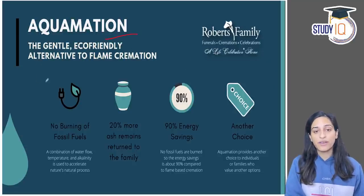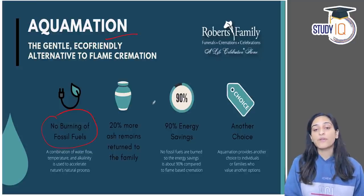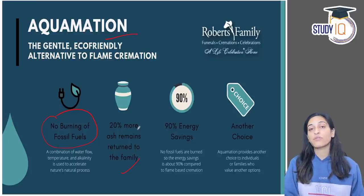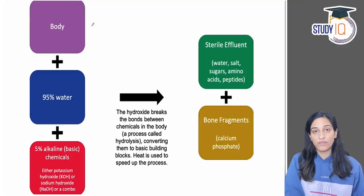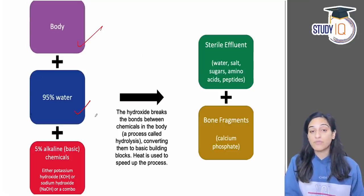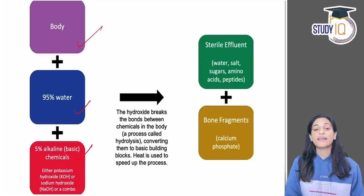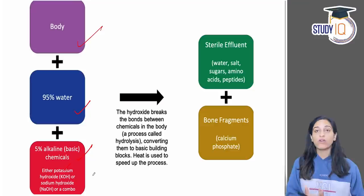In aquamation, there is no burning and no fossil fuel burn. About 20% more ash remains are returned to the family compared to traditional cremation, and 90% more energy is saved. The body is processed using 95% water and 5% alkaline basic chemicals — either potassium hydroxide or sodium hydroxide, or a combination of both.